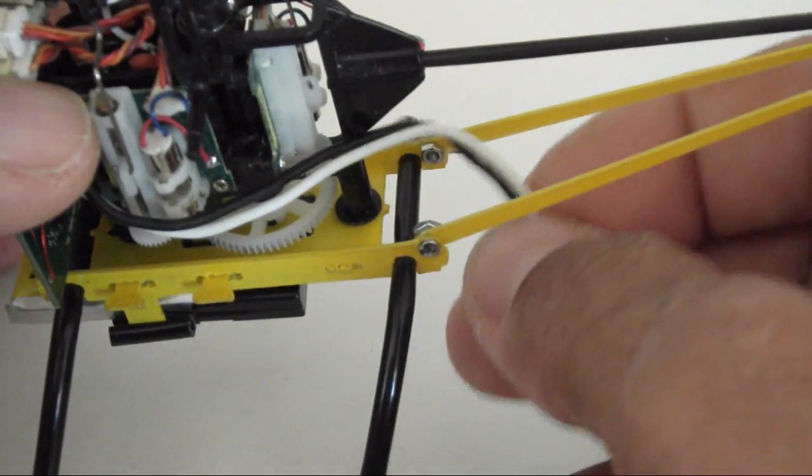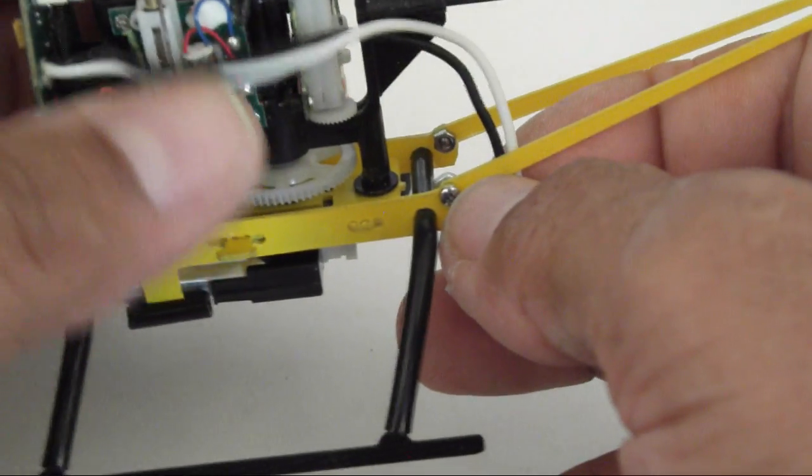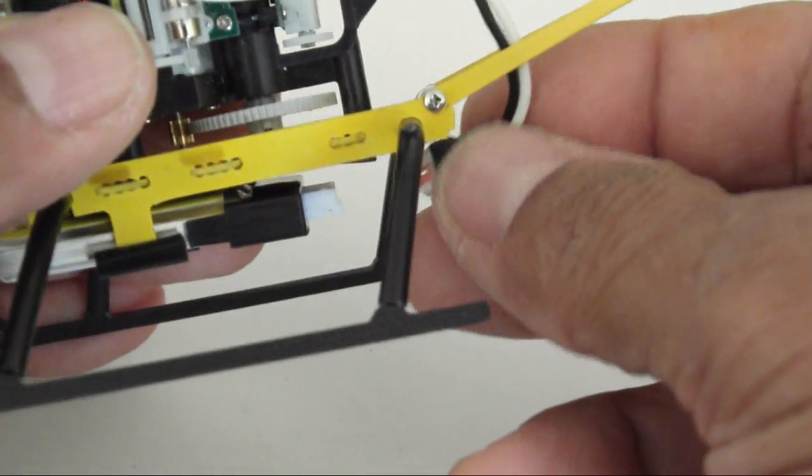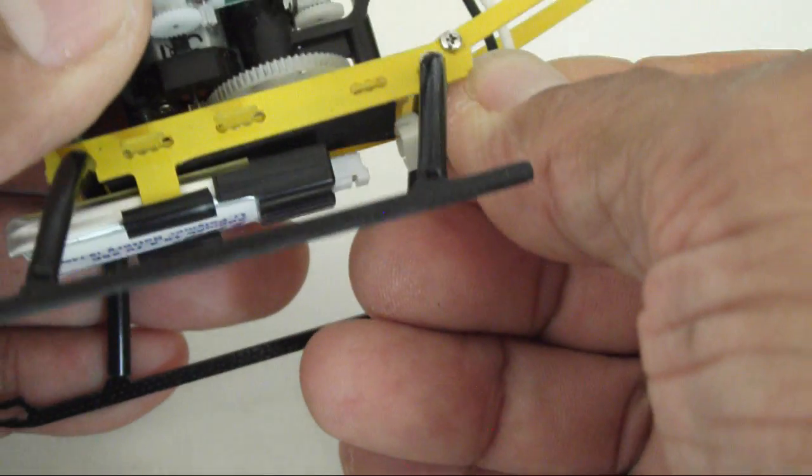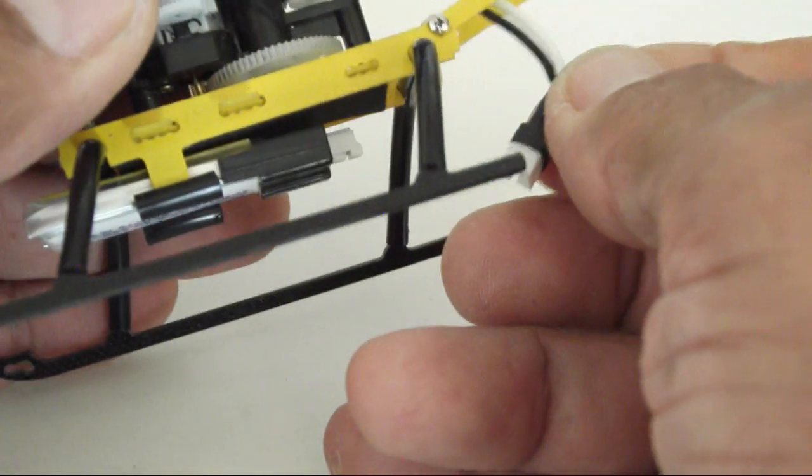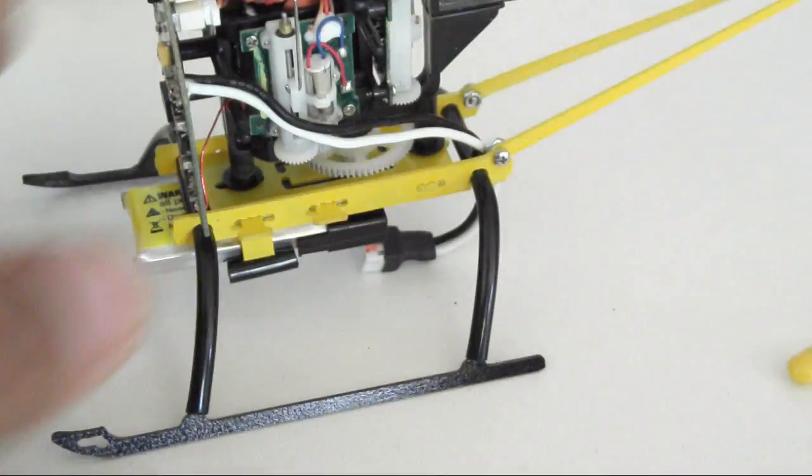You can route the wires as we are doing it here. Make sure that it doesn't engage with the gears so that you don't wear out those wires or ruin them, and just simply connect that when you are ready to fly. Alright, so that completes that assembly.